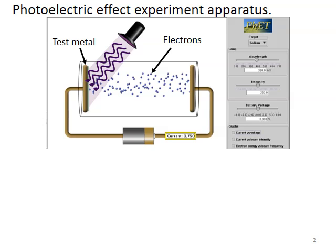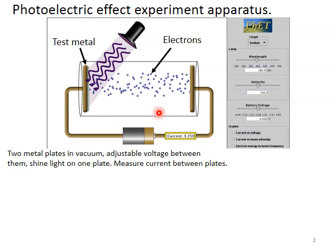All right, so this is the photoelectric experiment right here. You've got a test metal, and the electrons in the test metal are ejected off, and they can travel across this gap, and if they travel across, we can get a current. There's a potential between these two devices. We can adjust this voltage. We shine light on one of the plates, and then we make measurements of the current that comes through.